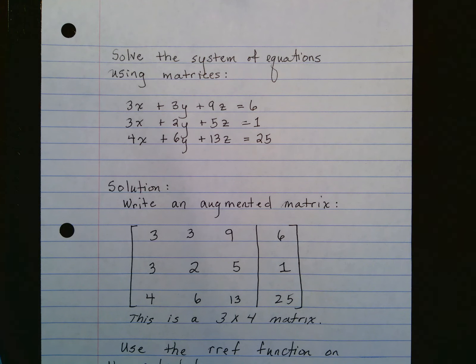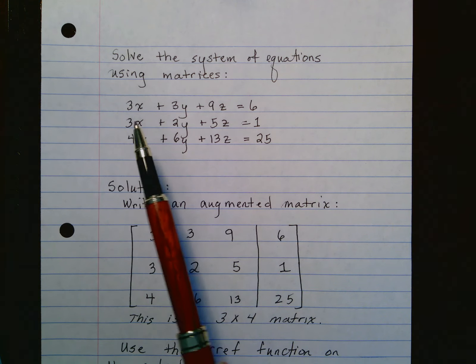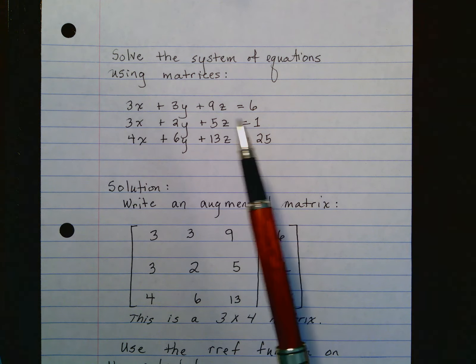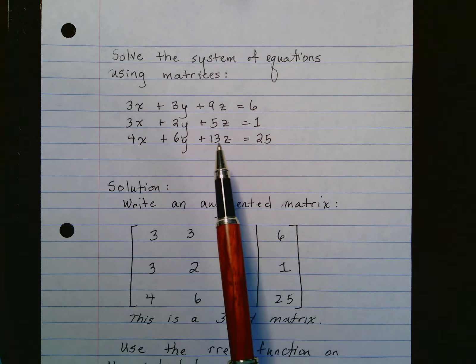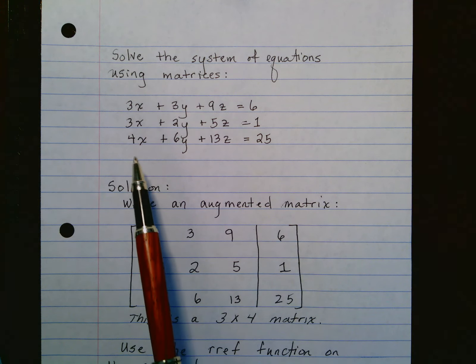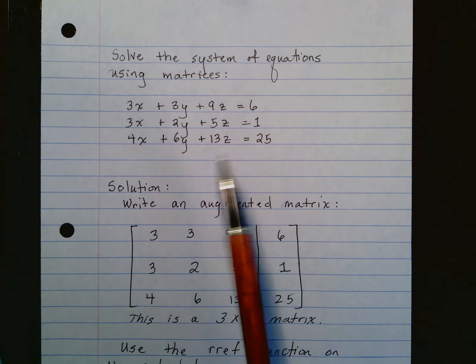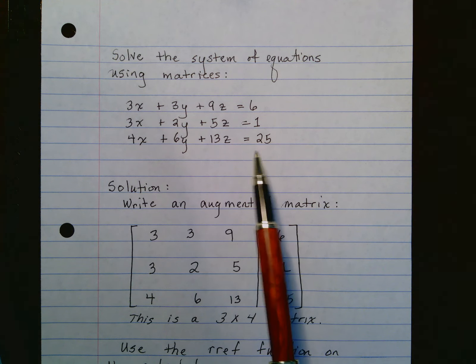In this problem, we're going to solve the system of equations using matrices. Here's our problem: 3x plus 3y plus 9z is equal to 6, 3x plus 2y plus 5z equals 1, and 4x plus 6y plus 13z equals 25.